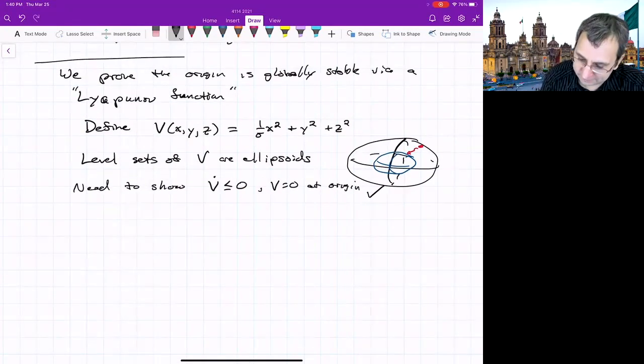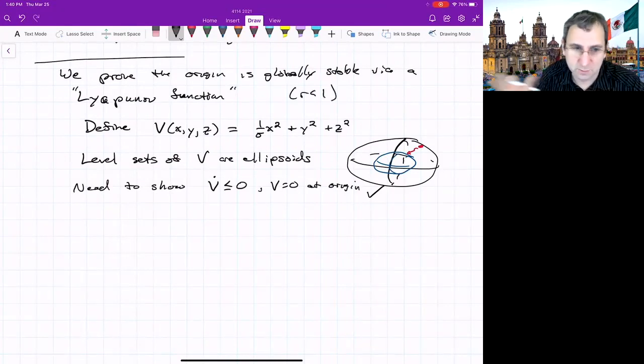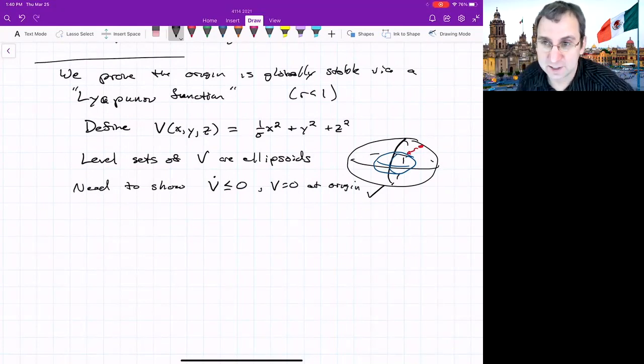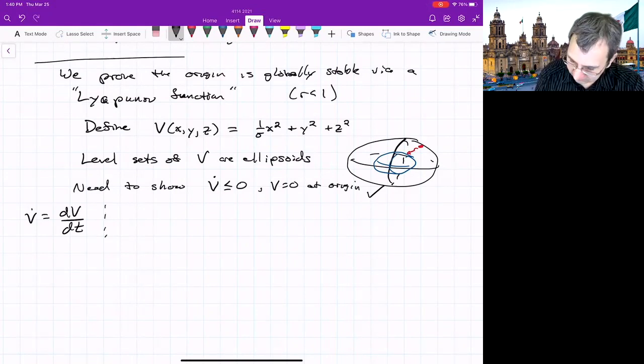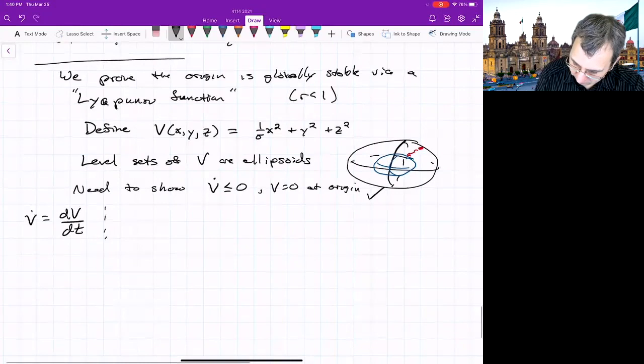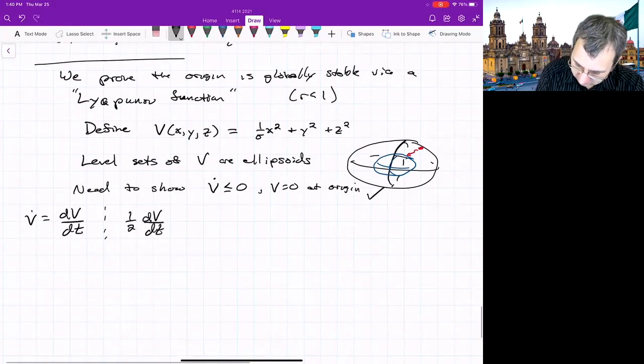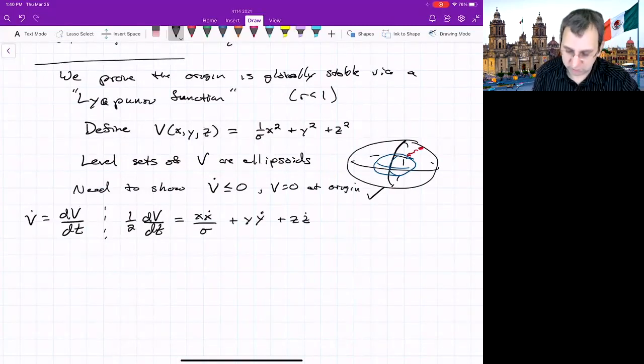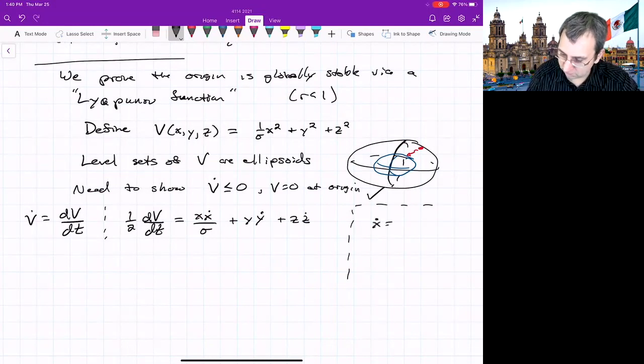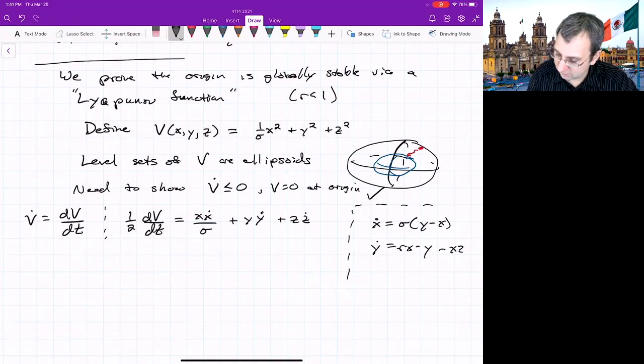Now we just have to calculate what v dot is. So we'll calculate it. And remember, this is just for r less than 1. Something interesting happens for r greater than 1, and for r much greater than 1, other things can happen. So for any point other than the origin, what do we have? v dot, which is dv/dt. We want to calculate what that is. We've defined that v. Let's take the time derivative. I'll put the factor of 2 on the other side. So this will be 1/2 dv/dt equals x(x dot)/sigma plus y(y dot) plus z(z dot). And then just plug in what we have from the Lorenz equations. Let me remind us over here. y dot equals rx minus y minus xz, z dot equals xy minus bz.